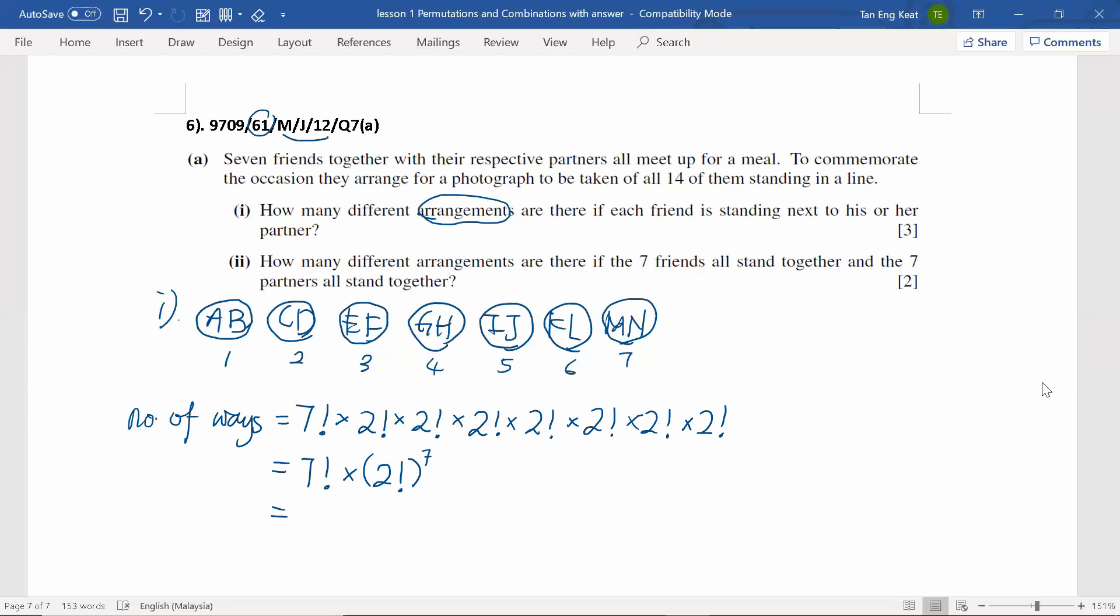Using the calculator, the number of ways will be 645,120.